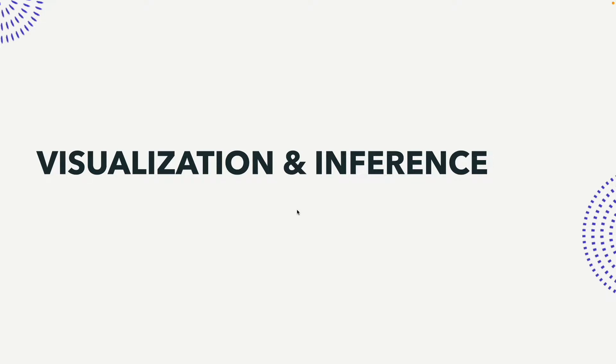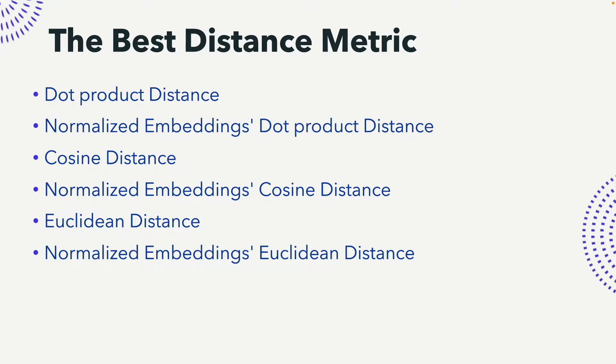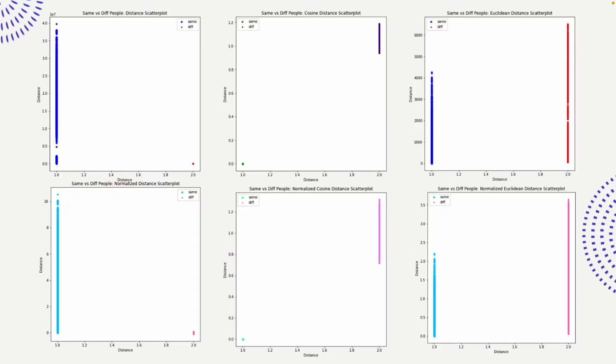We need to find out which is the best model and what hyperparameters are best. First, for deciding which is the best distance metric — we are doing face recognition and verification, where the distance between two embeddings from the backend model tells us whether two faces are the same or not. These were the six different distance metrics: normalized embeddings, where we normalize and then perform the dot product, cosine distance, or Euclidean distance between two embeddings.